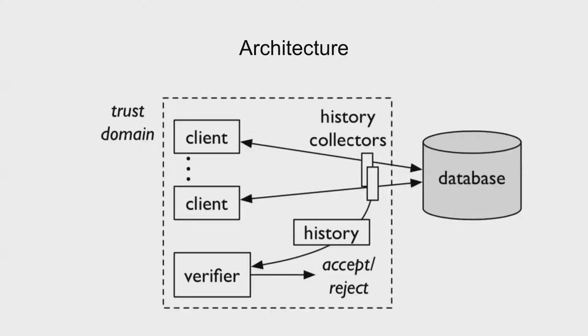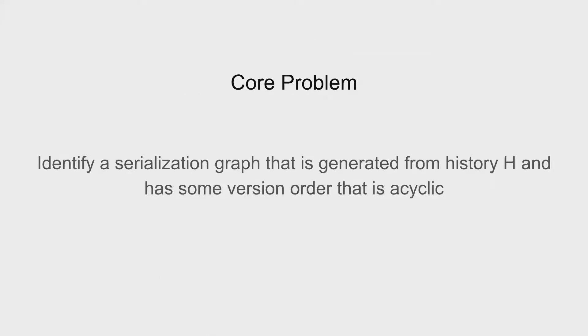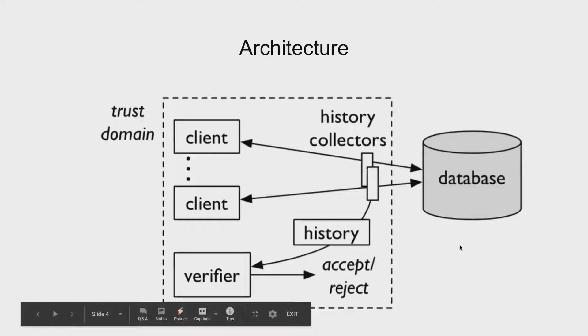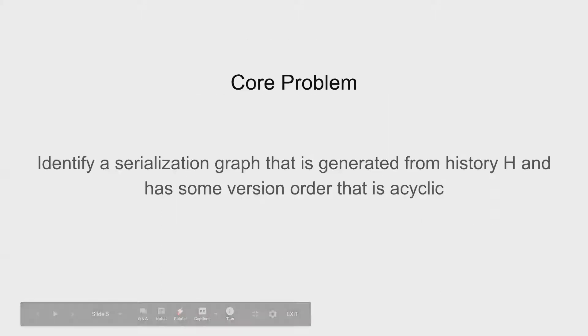Which brings us to our core problem which is that we identify a serialization graph that is generated from our history of client transactions and we find some version order in it that is acyclic. So if it is acyclic then we know that whatever we have is serializable. This is difficult in our context because Cobra does not have access to the database's internal ordering at all. It has to consider all possible version orders and test whether any of them yield an acyclic serialization graph.